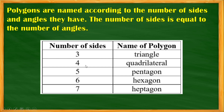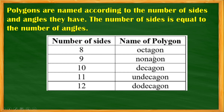Four sides is a quadrilateral. Five sides is a pentagon. Six sides is a hexagon — hexa means six. Seven sides is a heptagon — hepta means seven. Eight sides is an octagon — octa means eight — with eight sides and eight angles. Nine sides is a nonagon. Ten is deca, so ten sides is a decagon. Eleven sides is an undecagon, and twelve sides is a dodecagon.